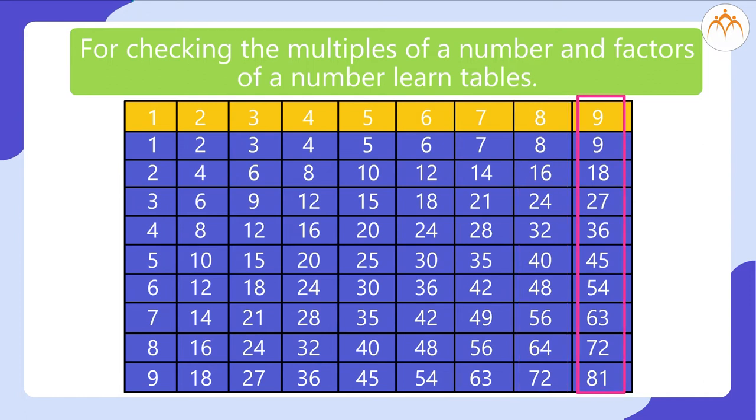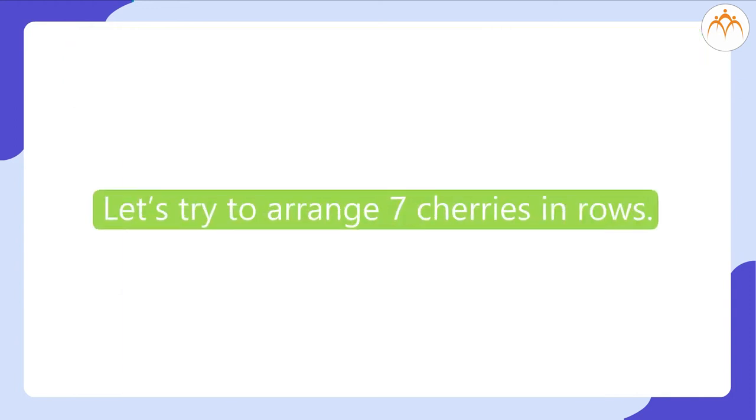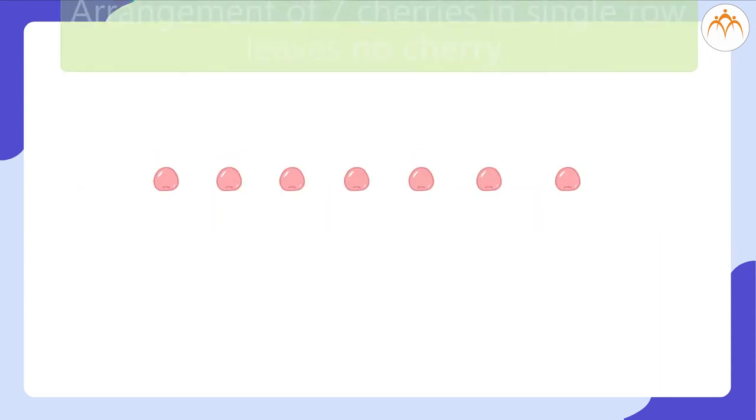Also, you know the factors of the numbers. Now, let's try to arrange 7 cherries in rows.